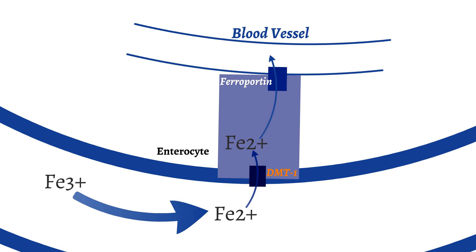If the iron bound to ferritin is not utilized, it will eventually be lost when the enterocyte completes its natural life cycle and dies. Hepcidin is the main regulator of iron absorption within the body. Iron is stored in the body within specialized cells in the liver called Kupffer cells. When iron stores are full, hepcidin is released by liver cells called hepatocytes. Hepcidin binds to the ferroportin transporter and down-regulates its activities, so iron remains in the enterocytes and is not absorbed into the body. Keep in mind that inflammation can also trigger hepcidin release, preventing iron utilization in times of significant inflammation.